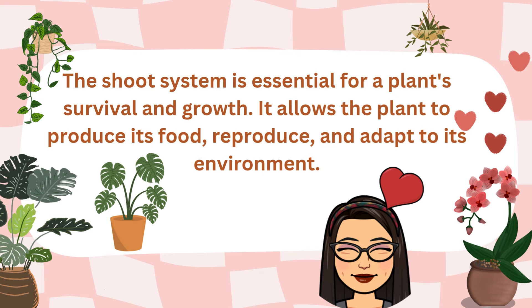The shoot system is essential for a plant's survival and growth. It allows the plant to produce its own food, reproduce, and adapt to its environment.